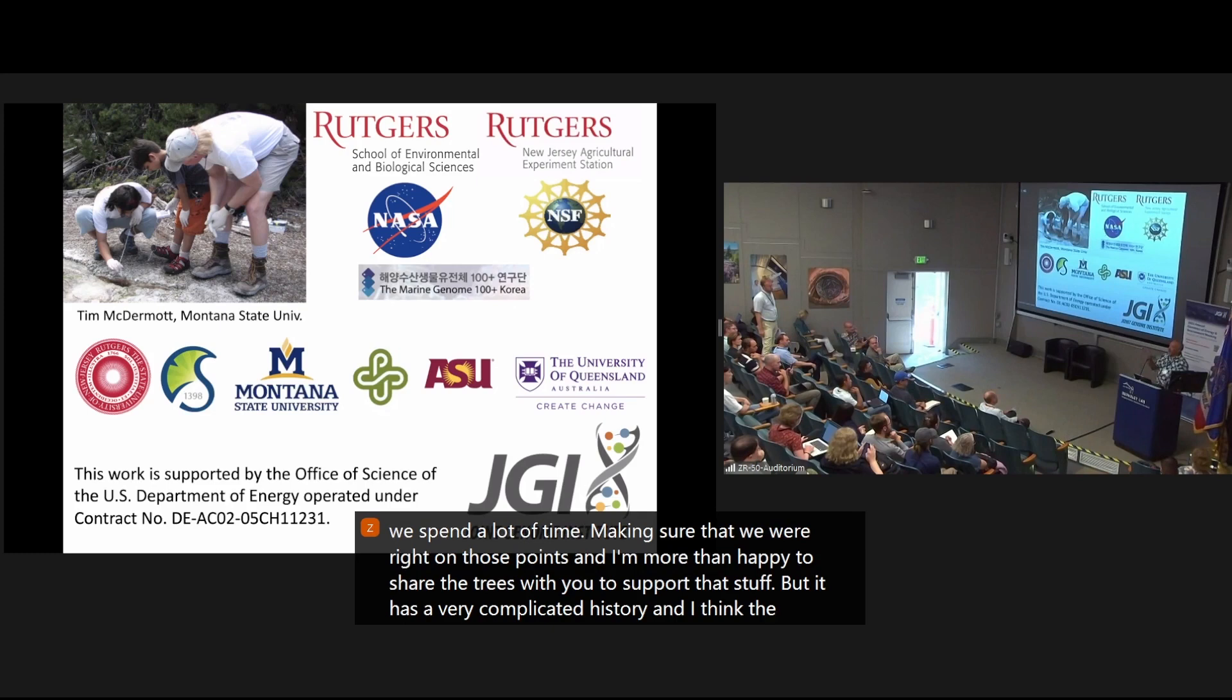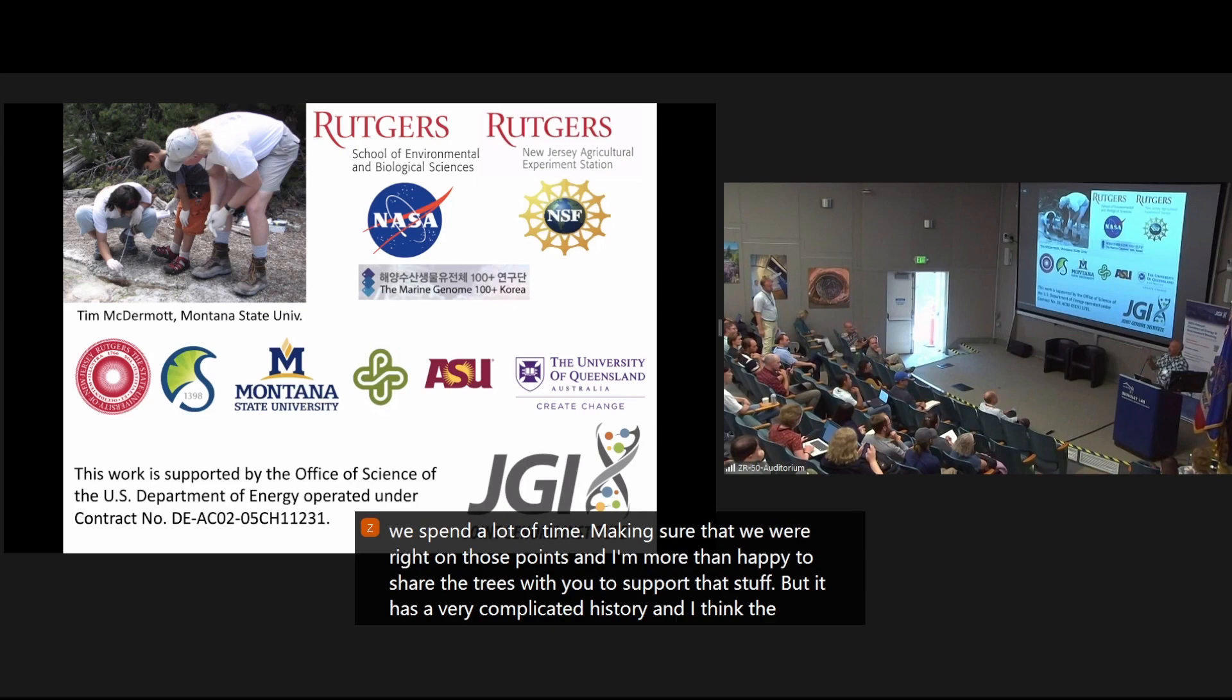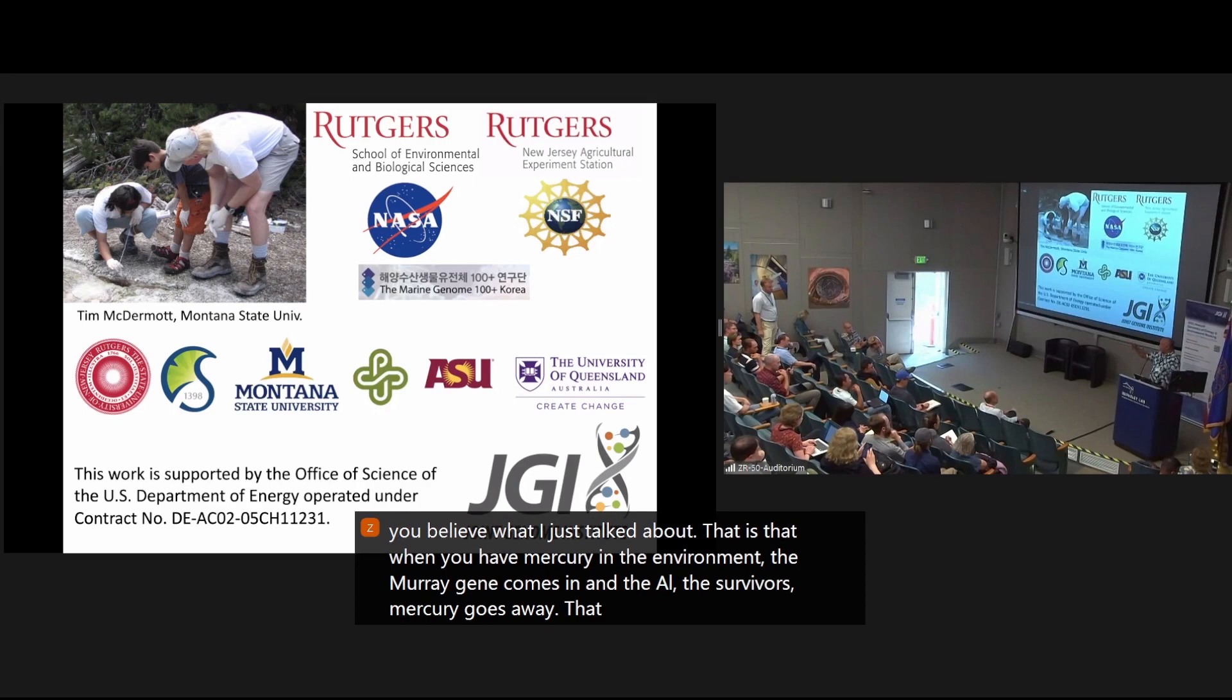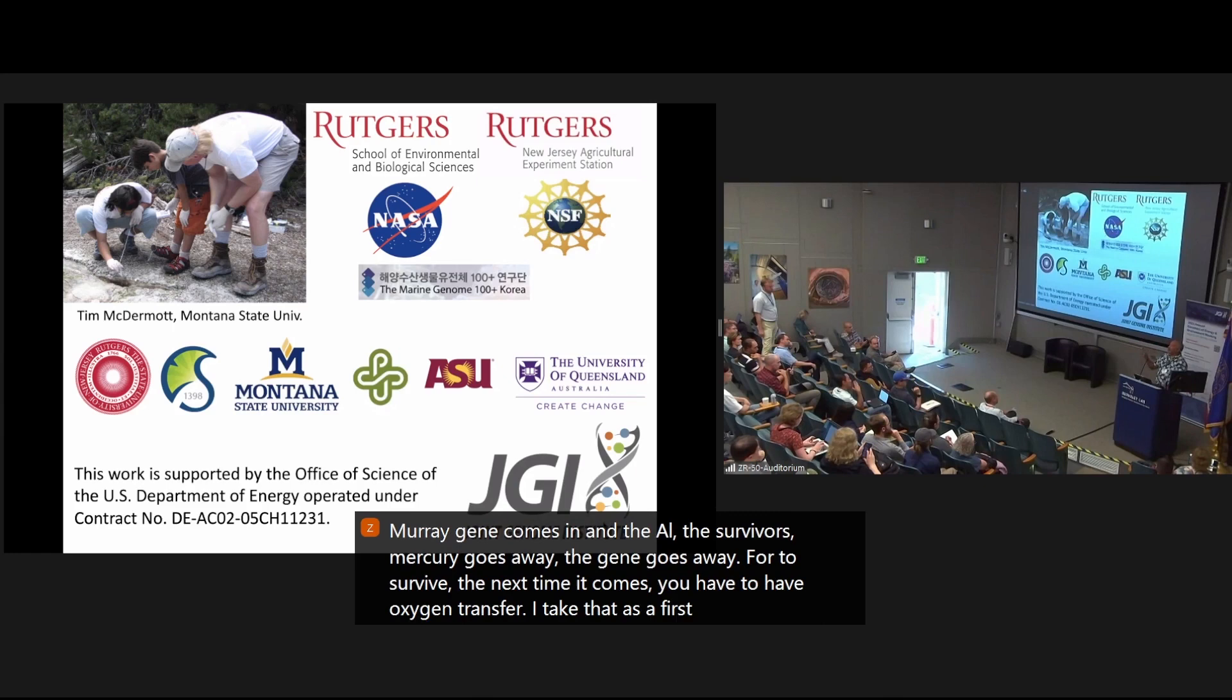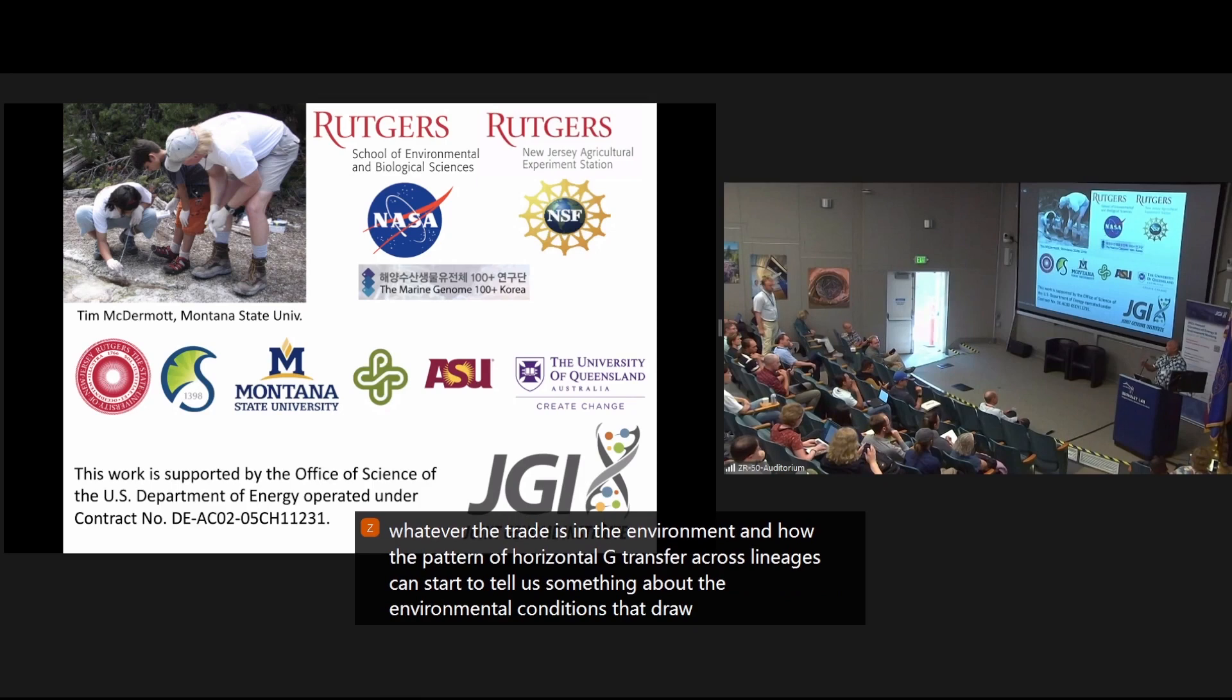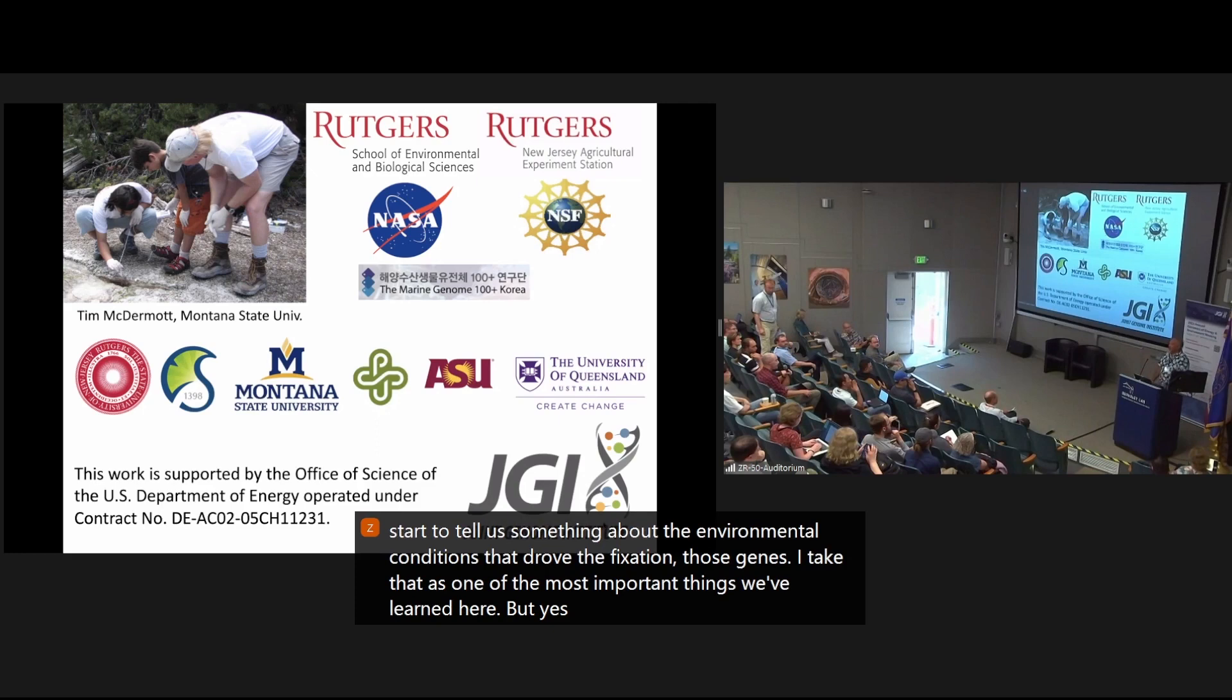And I think the most important thing about a complicated history is if you believe what I just talked about, that is that when you have mercury in the environment, the MerA gene comes in and the alga survives, mercury goes away. The gene goes away for it to survive. The next time it comes, you have to have horizontal gene transfer. I take that as the first time you can start to think about the episodes of these metals or whatever the trait is in the environment and how the pattern of horizontal gene transfer across lineages can start to tell us something about the environmental conditions that drove to fixation of those genes. I take that as one of the most important things we've learned here. But yes. Great. Thank you. You're welcome.